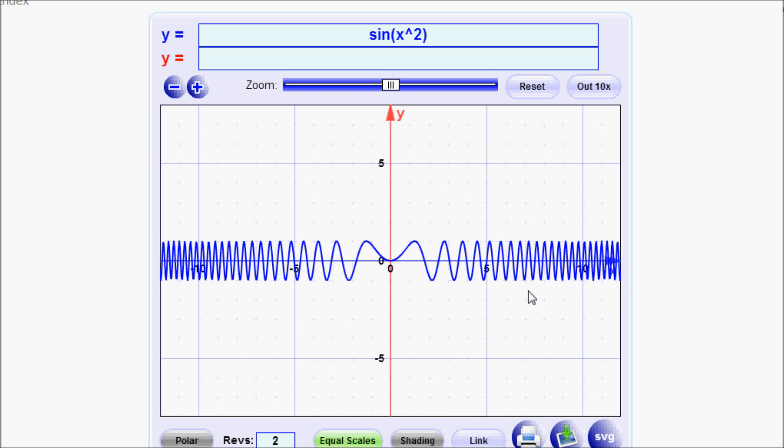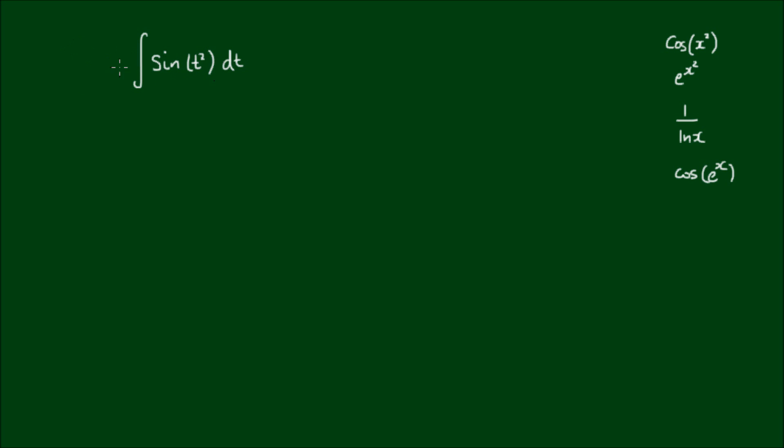And that means an integral does exist for all values of x. So I can express this integral as a function of x if I say S(x) is equal to the integral from 0 to any value of x. And this is known as the Fresnel integral.